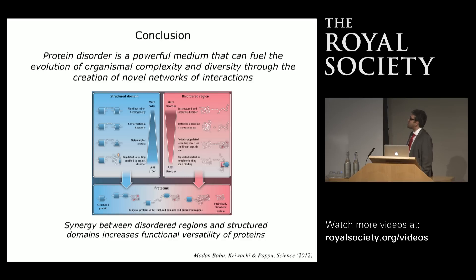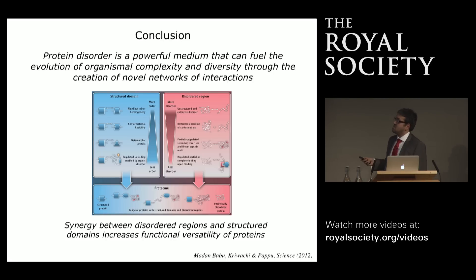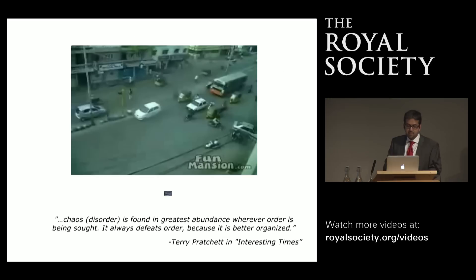I don't mean to say that disordered regions are more important than structured domains or vice versa—it is actually the synergy between disordered regions and structured domains that increases the functional versatility of proteins. Disordered regions on their own are probably less functional, and structured domains with clearly defined biochemical activity but no regulation is probably also not a good idea. The combination—having a disordered region paired with a structured domain—provides the flexibility to use a particular biochemical function in a specific context. If structured domains contribute to the biochemical function, disordered regions contribute to the context in which that function is used. Through a small number of mutations, you can very rapidly change the context in which the same biochemical activity is realized, thus leading to complexity and diversity. As a parting thought, I'd like to show a video of a daily scene on a road in an Indian city, which highlights how despite massive disorder, order can still prevail.